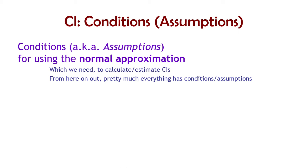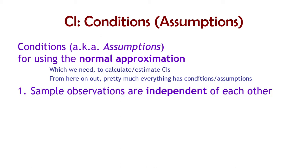Before you can use the normal approximation, you have to be pretty sure that things are normal. From here on out, everything has conditions or assumptions, because we want to estimate population values and we have to make certain assumptions about what's going on in our math and in the population. We're going to have lists of assumptions for pretty much every procedure we learn. These are the assumptions for confidence intervals using the normal approximation — and that's the only type of confidence interval we'll do for this class.